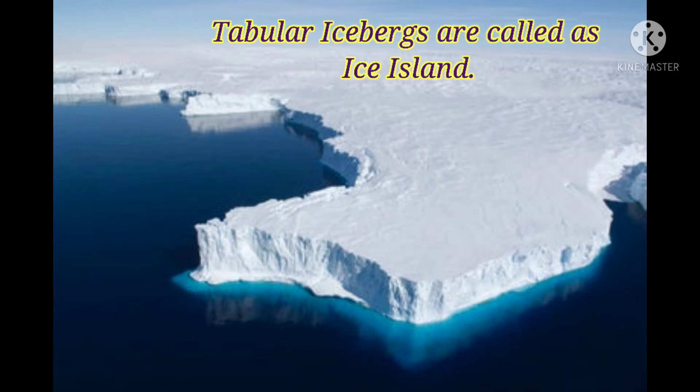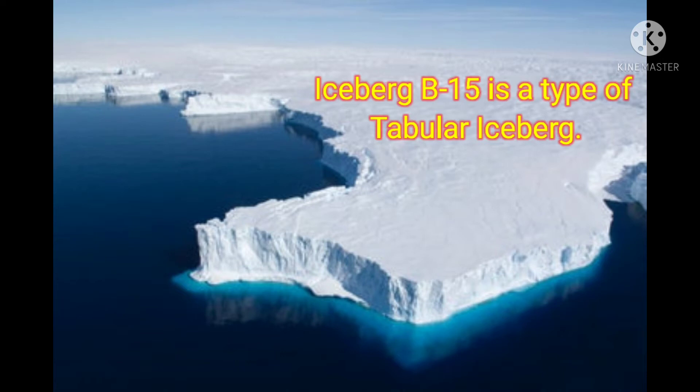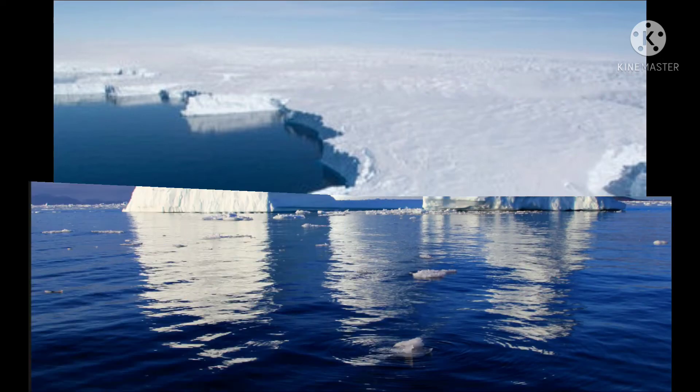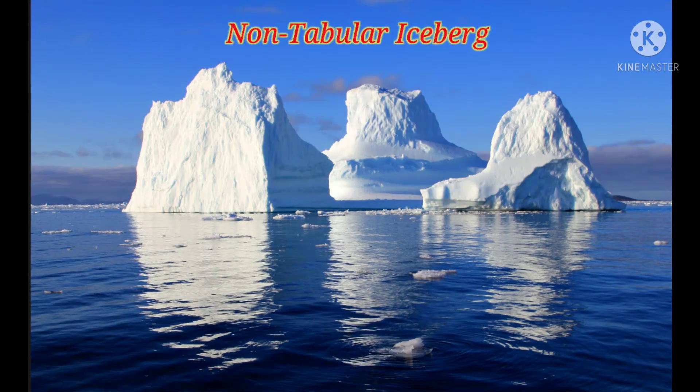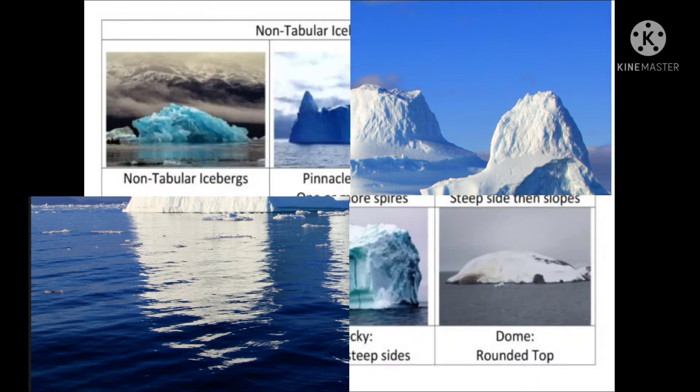More tabular icebergs are found in Antarctica. Iceberg B15 is one of the most well-known tabular icebergs found in Antarctica. Any shape of iceberg other than the tabular shape is called a non-tabular iceberg.